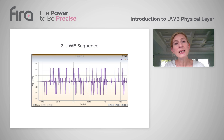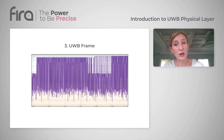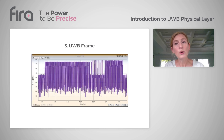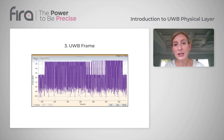UWB data is transmitted in a frame composed of several fields, including synchronization, header, and payload fields.